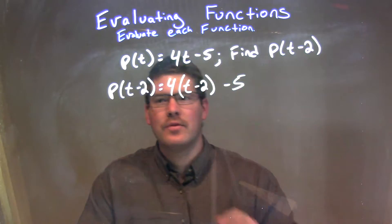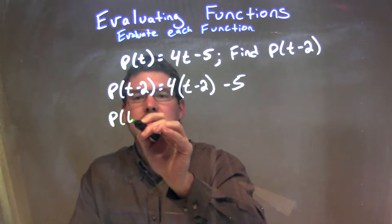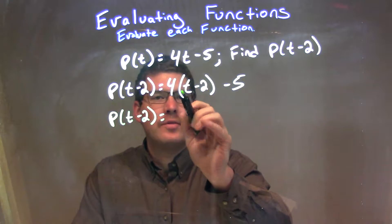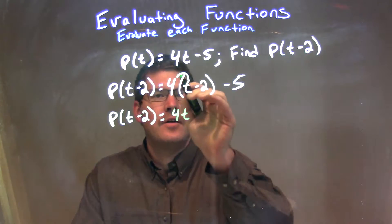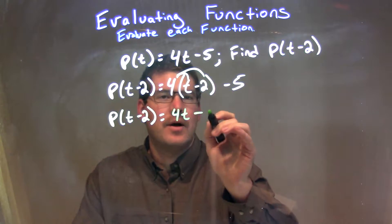So now we need to simplify. So we break down P of t minus 2. We need to distribute this 4 across. 4 times t is 4t. 4 times a negative, or minus 2, is a minus 8.